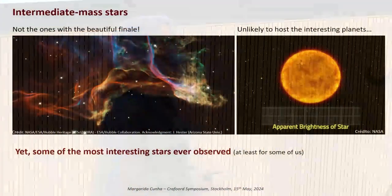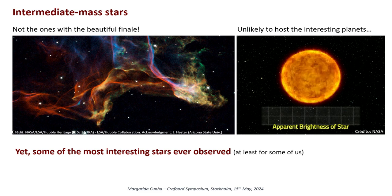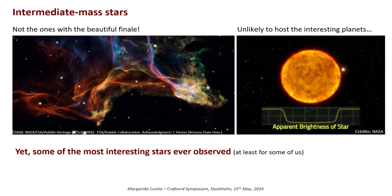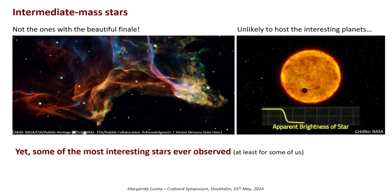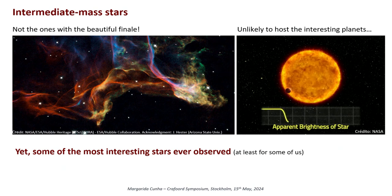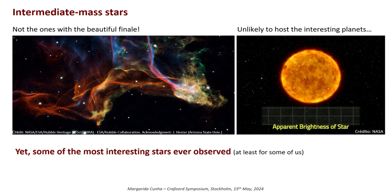I will talk a little bit about intermediate mass stars. These are not the massive stars that Connie loves and that have spectacular endings. They're also not stars like the sun that Jörn talked about, or the sun itself that Douglas talked about. They are exceedingly exciting stars because they are at that niche in the HR diagram where they are influenced by a number of important physical processes. I will be talking about essentially stars that are about two solar masses — the AF stars.